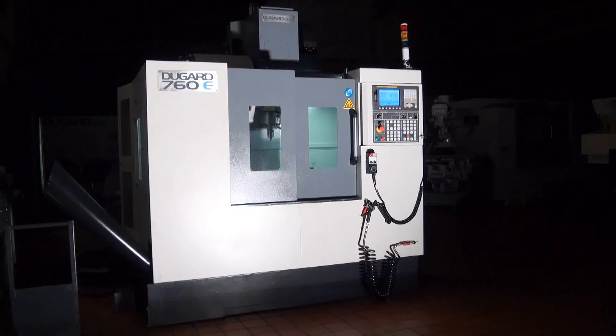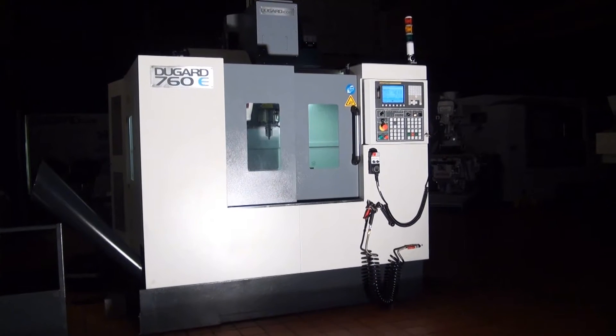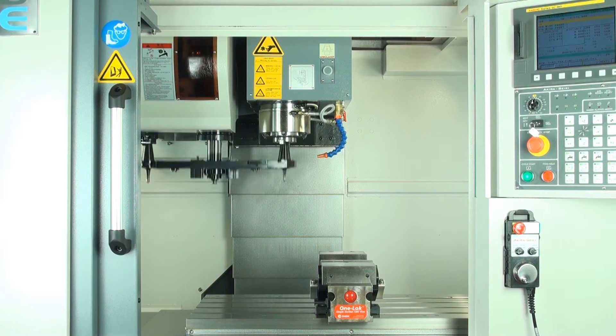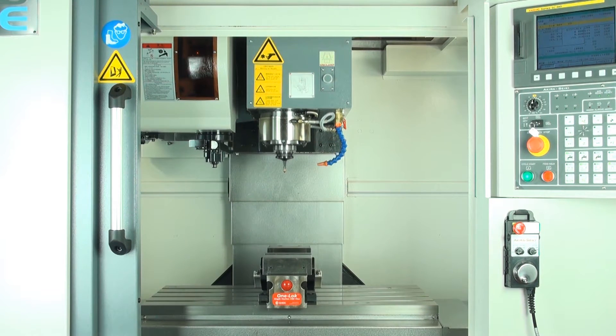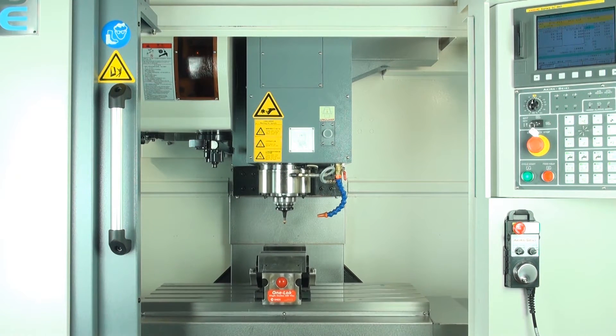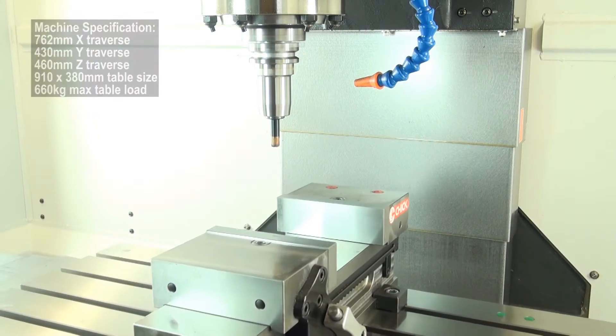The Dugard 760E is the first in the new E range of cost-effective VMCs at Dugard. A compact, sturdy machining centre, technically it's an evolution of the Eco 760 but it's still priced to sell.